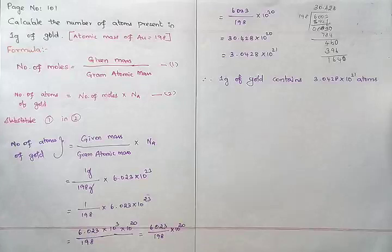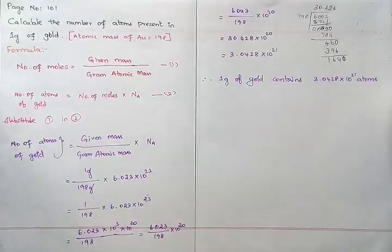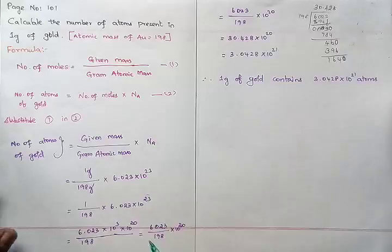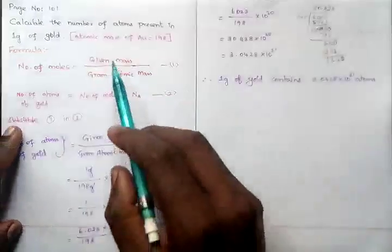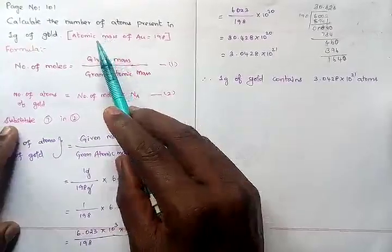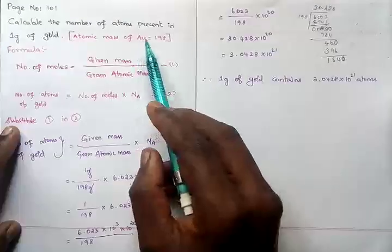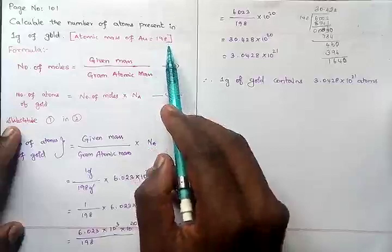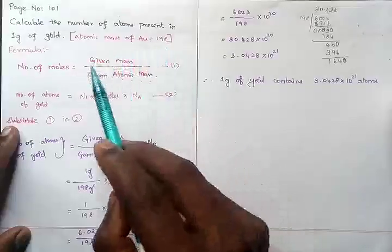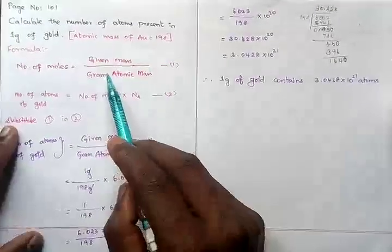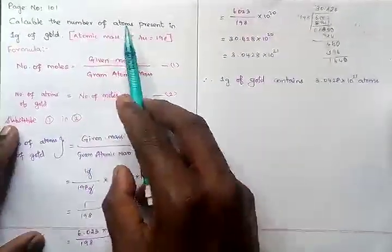In this video, we're going to talk about the calculation of the number of atoms present in 1 gram of gold. The atomic mass of gold provided is 198. What is the formula?